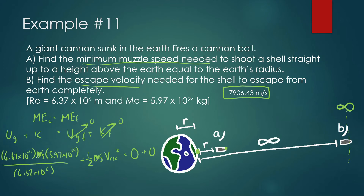Since we have this as negative, we bring it to the other side and find the escape velocity. The mass cancels out, and we should get the escape velocity around 11,181.4 meters per second. I'm going to give you some practice to see if you can do more of this escape velocity, because you're going to see it quite a bit in this chapter.